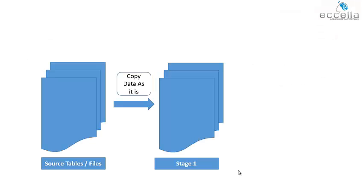The first set of mappings the tool creates copies data as it is from the source to a location we will call Stage 1. Stage 1 is an exact copy of the source data.